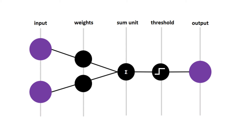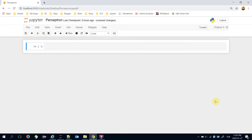A single layer perceptron, or shortly perceptron, is a legacy structure invented in the 1950s, but it triggered AI studies deeply. For example, modern neural network structures are mainly based on perceptrons as well. Today we are going to build the perceptron step by step, and we are going to work on the AND gate problem.